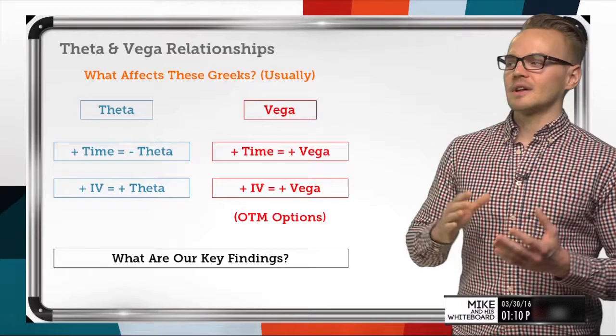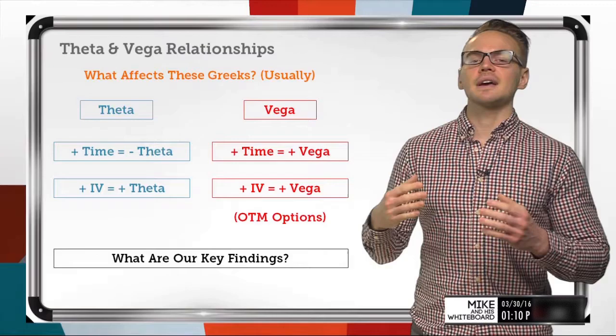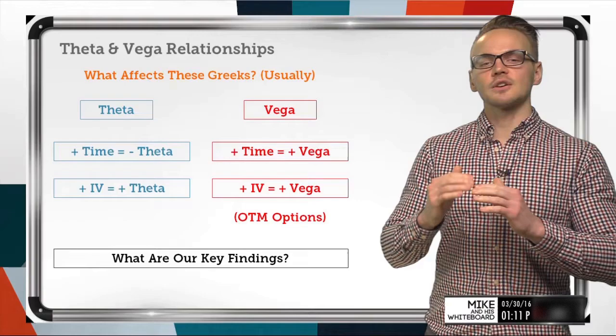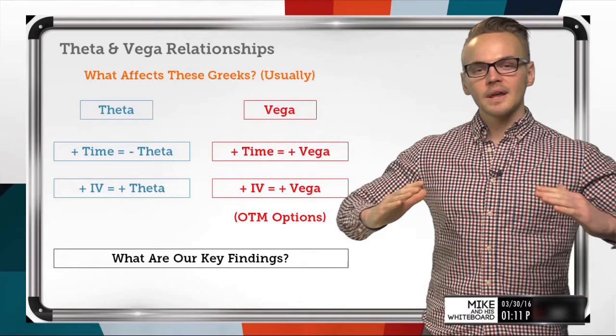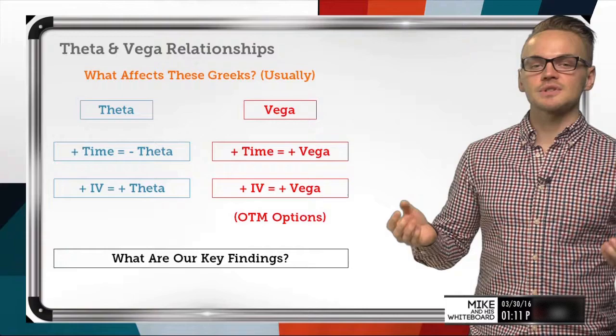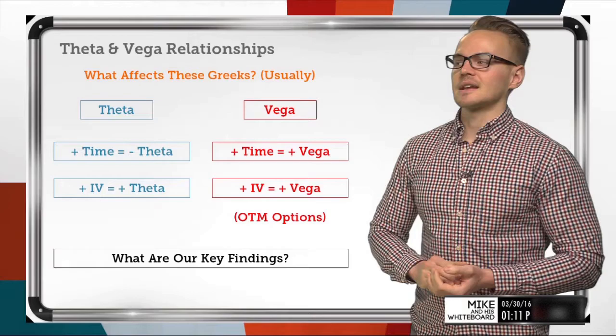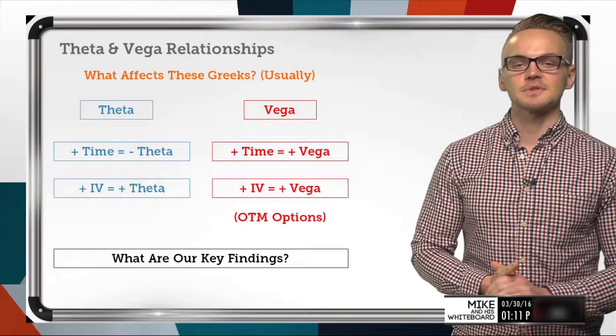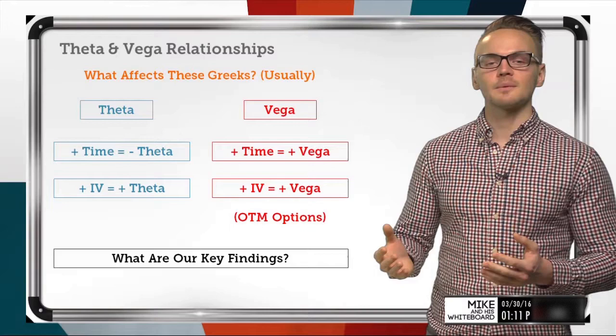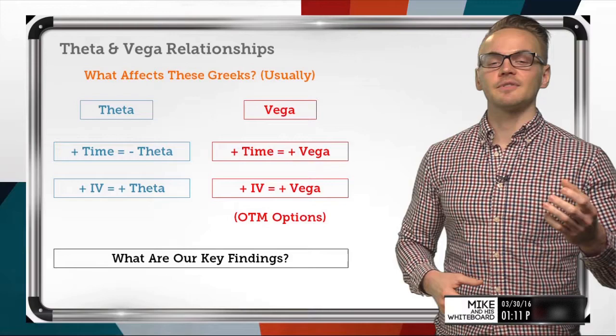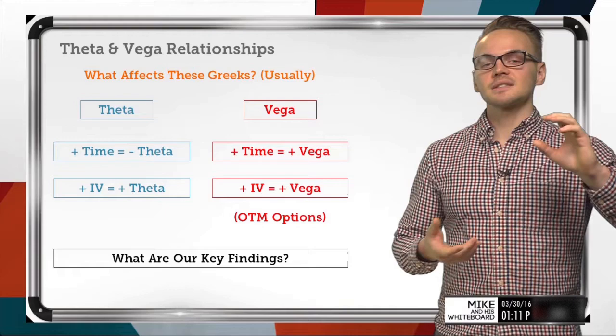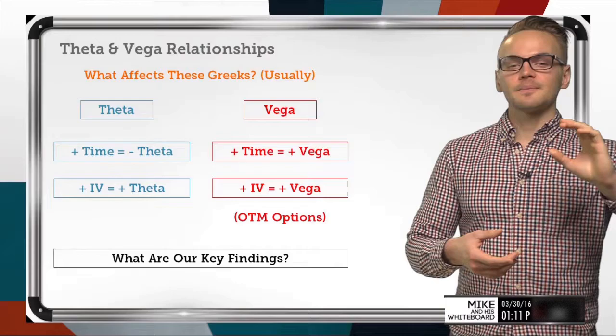When looking at out-of-the-money options and vega, increasing implied volatility generally increases the vega value. Vega is highest with at-the-money options, but when you look at the wings — the out-of-the-money options — you usually see those increase in vega as well with rising implied volatility. The theta-to-vega ratio is simple to calculate: take theta, divide it by vega, and multiply by 100 to find the TV ratio.